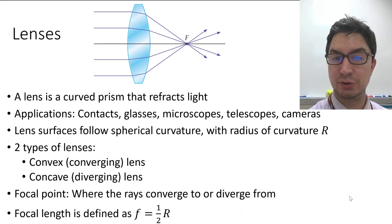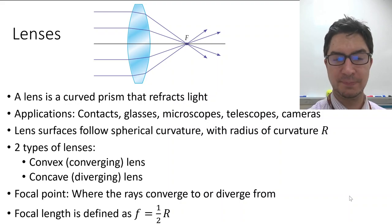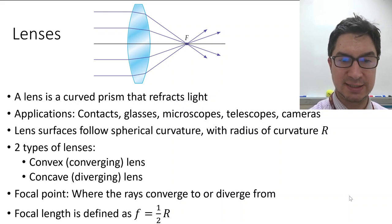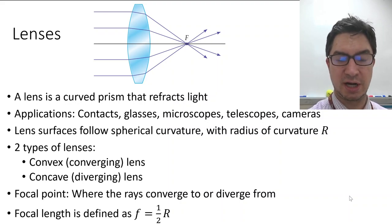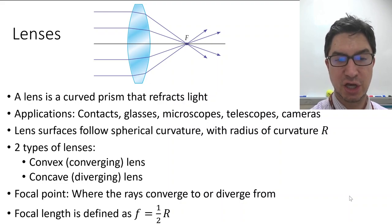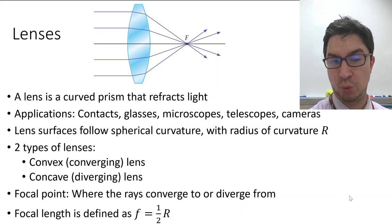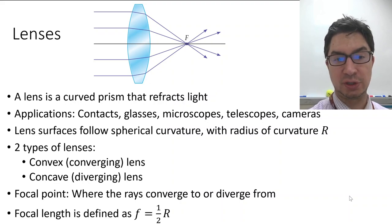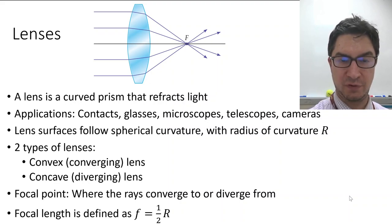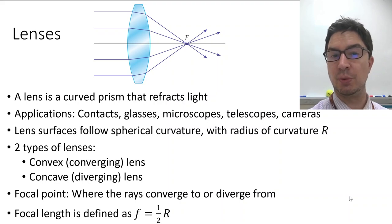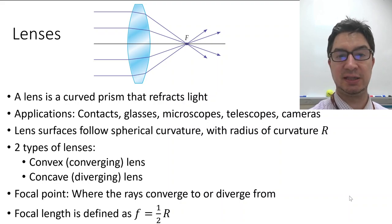Lenses follow spherical curvature just like we saw with mirrors, with a radius of curvature capital R. There are two types of lenses: convex, which are converging lenses, and concave, which are diverging lenses. The focal point is where the rays converge to or diverge from, and the focal length is defined as f equals one half r.